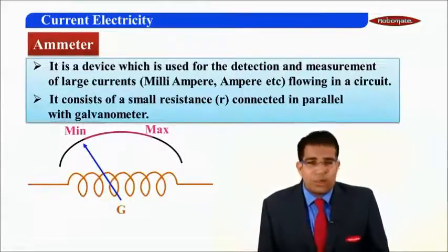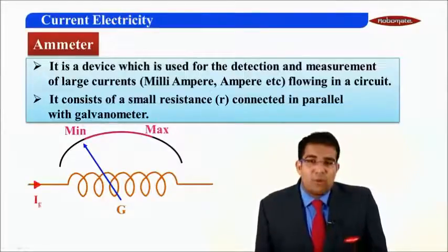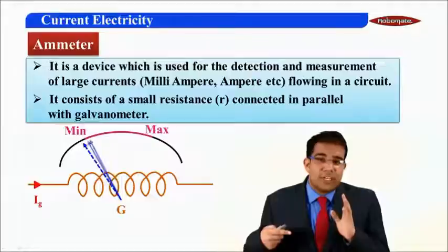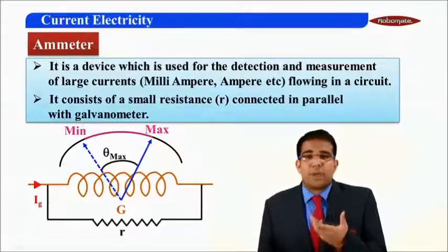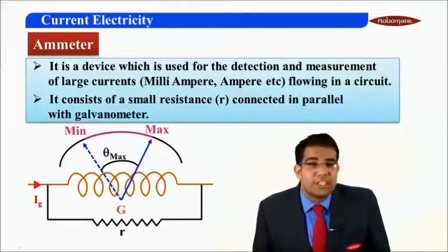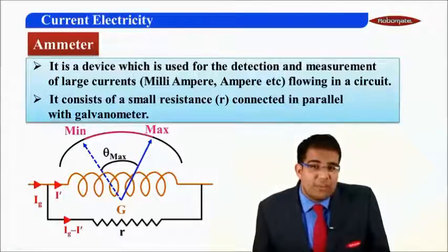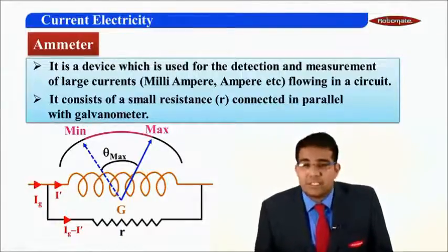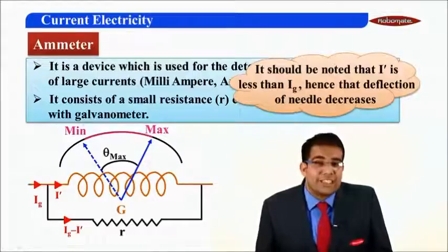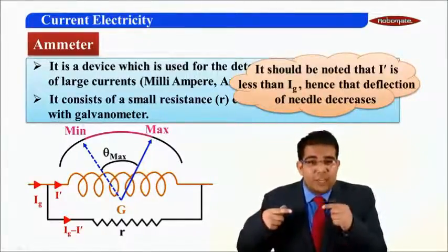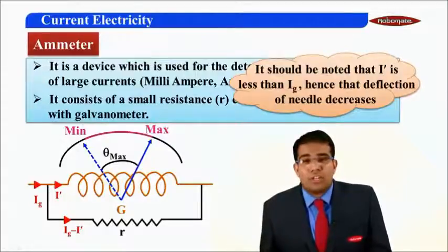The ammeter consists of a small resistance connected in parallel with the galvanometer. We have the galvanometer coil with resistance G and a needle pointing on a printed scale from minimum to maximum. If I pass the full scale deflection current Ig, the needle points to the maximum value. A small shunt resistance is placed in parallel with the galvanometer, so the current Ig is divided into I-dash entering the coil and (Ig minus I-dash) through the shunt. I-dash is less than Ig.